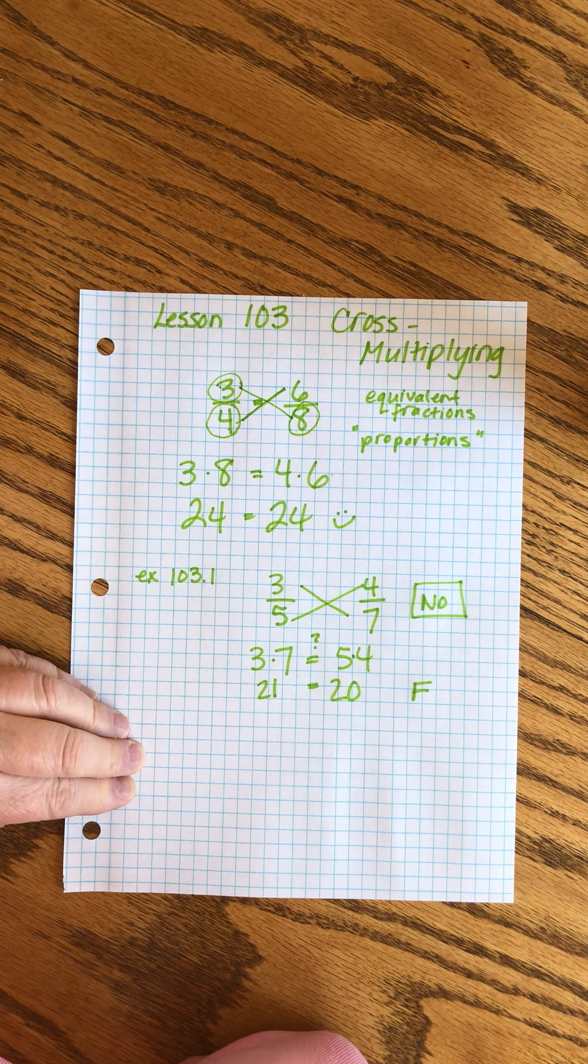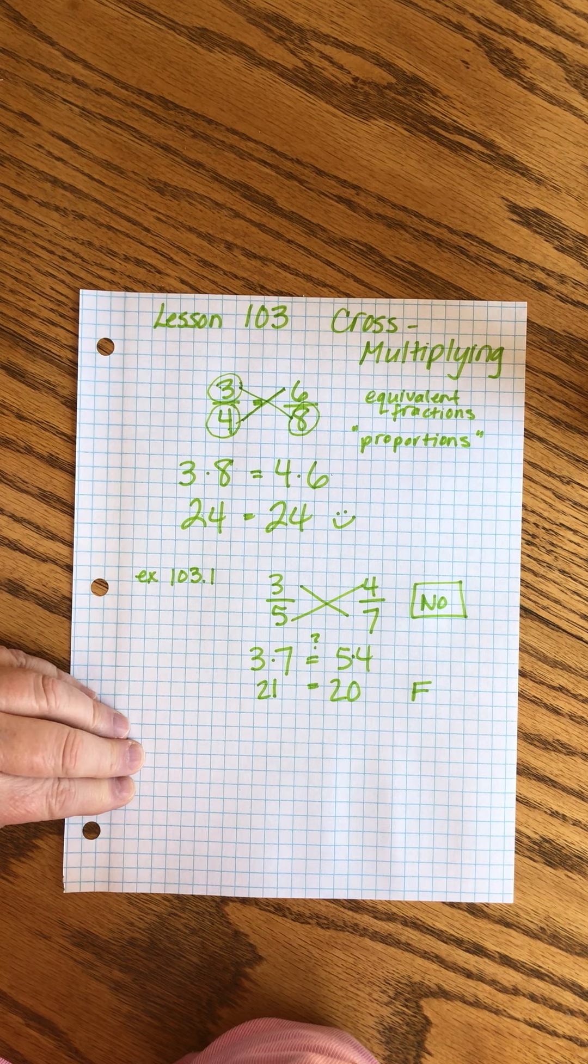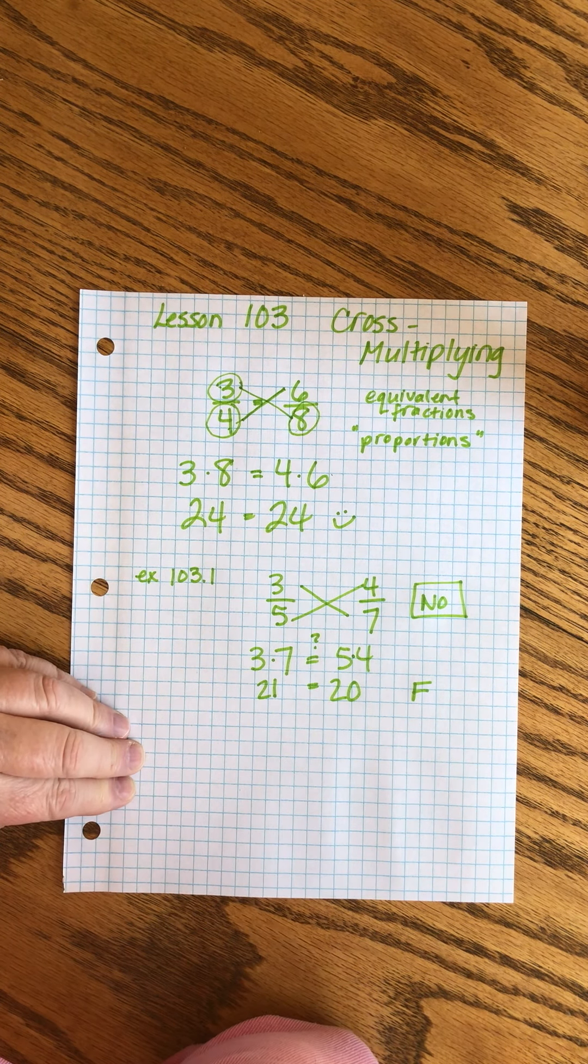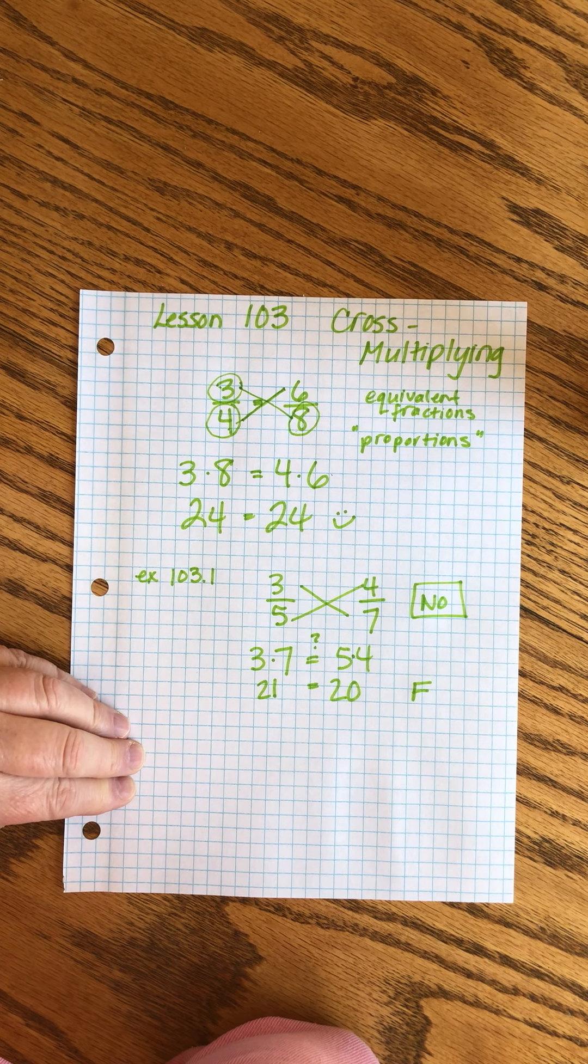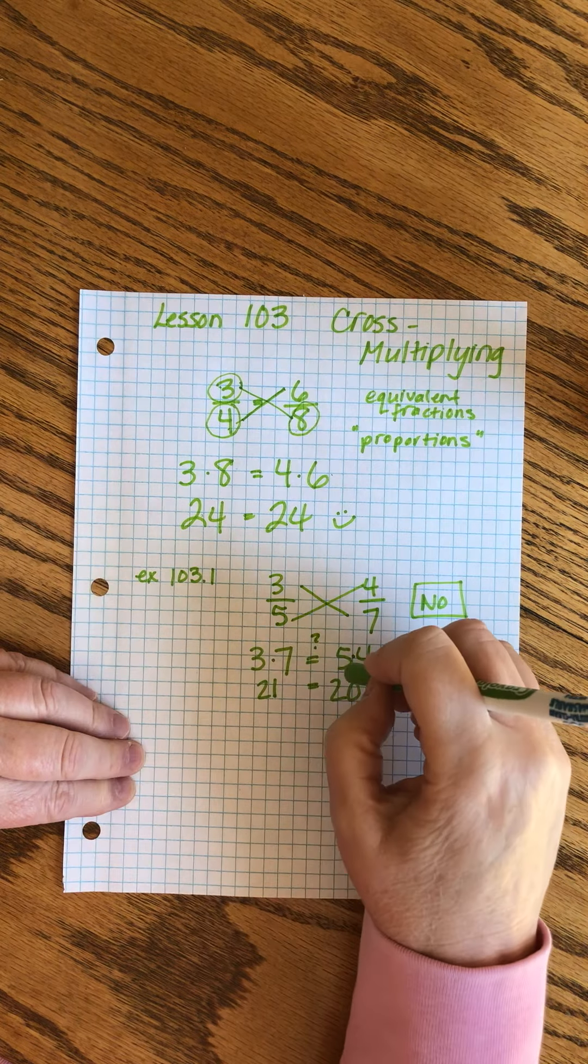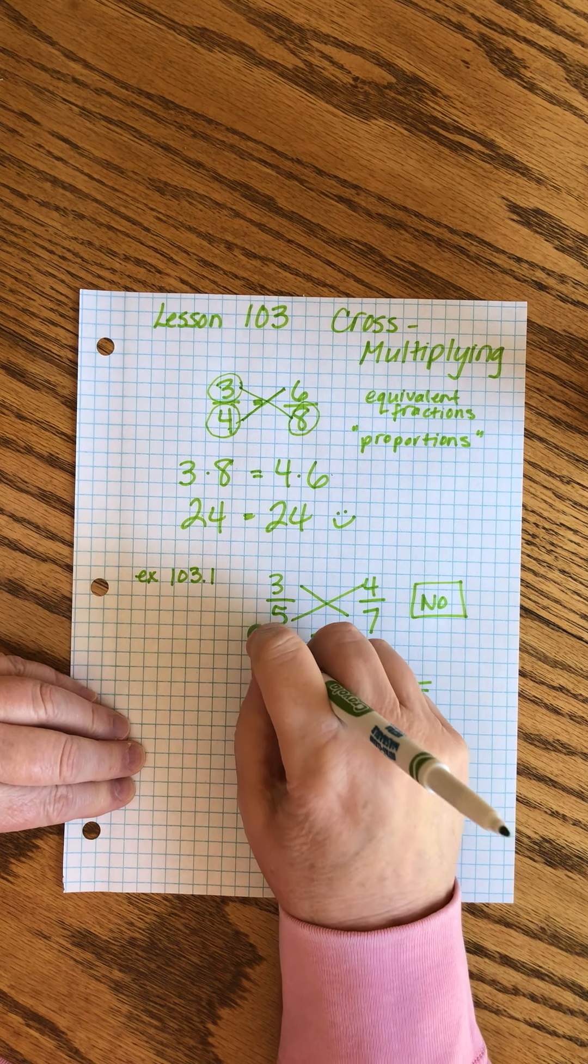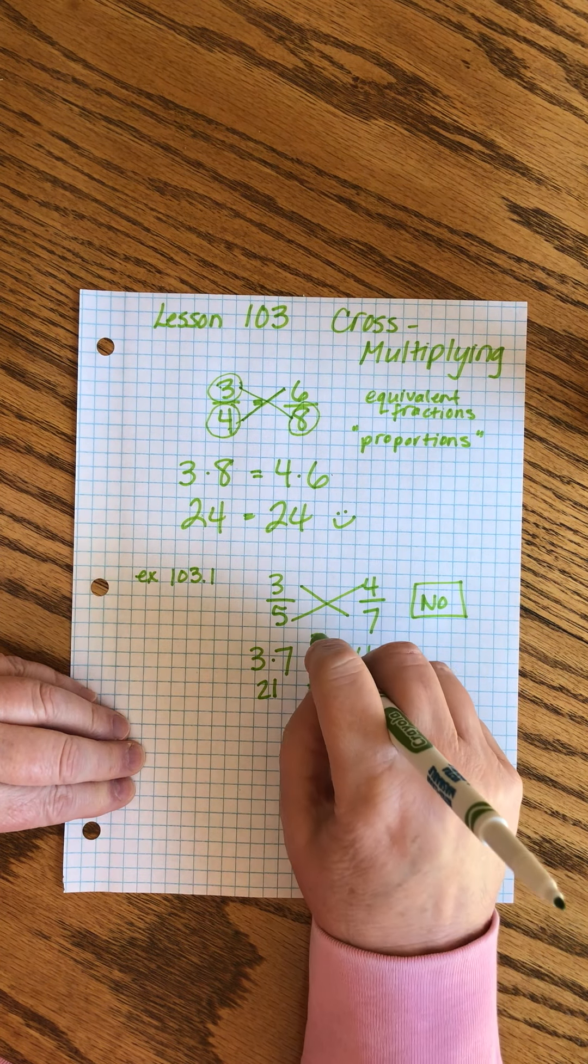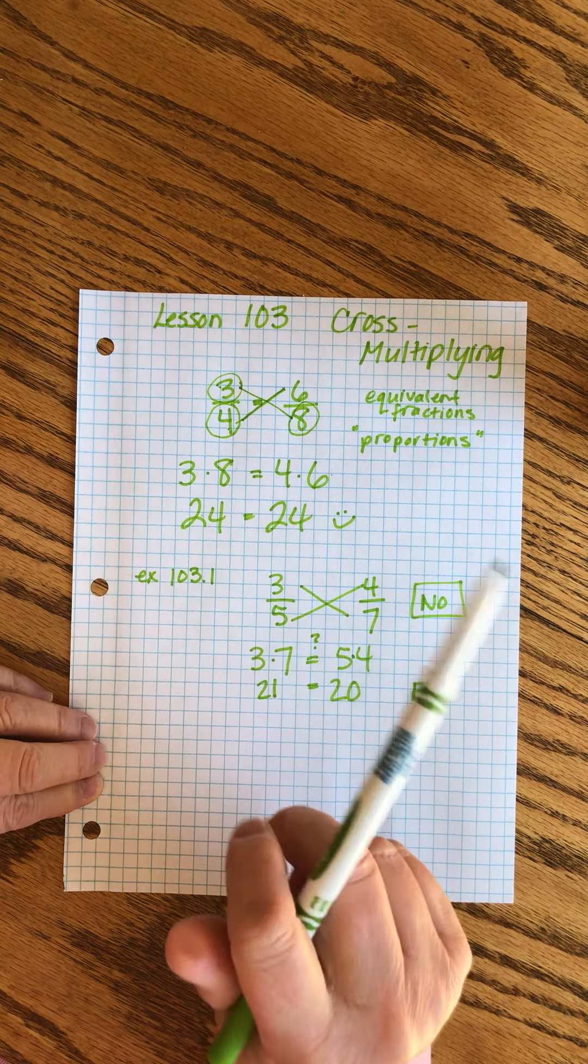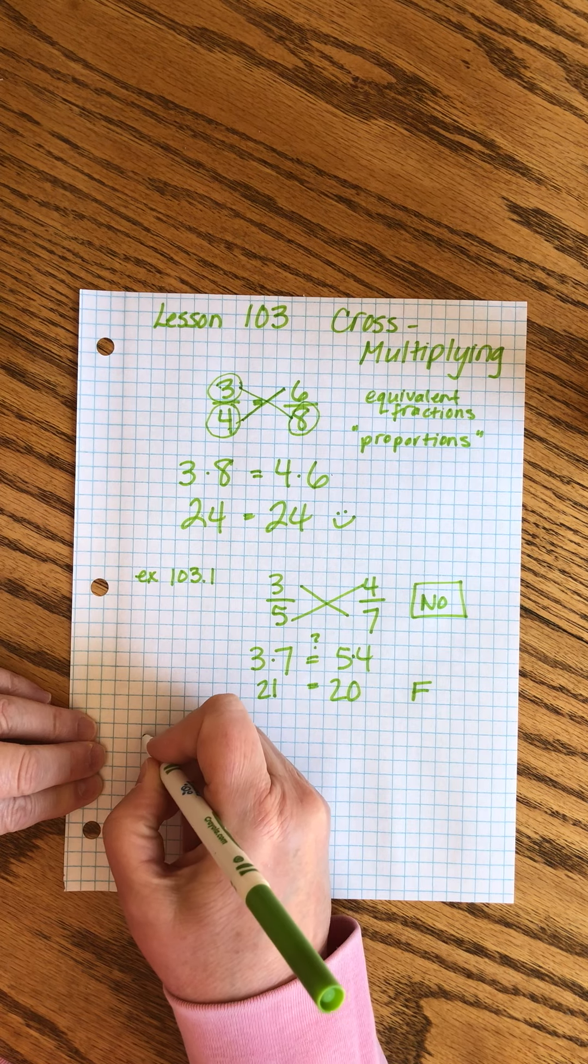John spent some time explaining why cross multiplying works, that it's not magic. I don't even want to go into it because right now it's not important. I want you to get familiar and comfortable with how to do it, and I want you to trust me that there's a mathematical explanation for why it always works. But I don't want to get into that theoretical business right now. We'll get to that later.